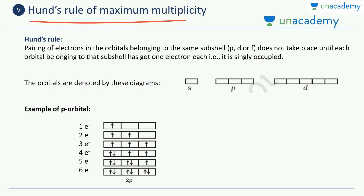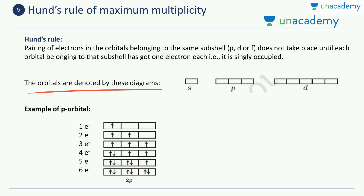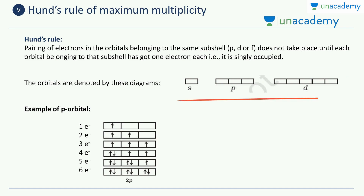Let's move on to the last rule: Hund's rule of maximum multiplicity. Hund's rule says pairing of electrons in orbitals belonging to the same subshell does not take place until each orbital has at least one electron. In the p subshell, each box represents one orbital, and you fill one electron per orbital first.